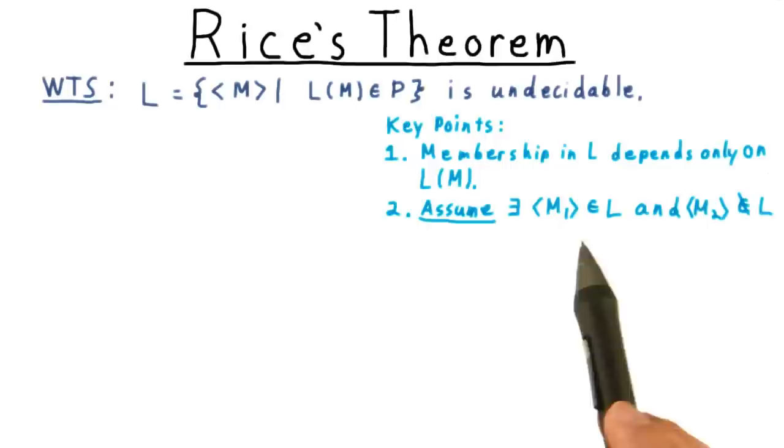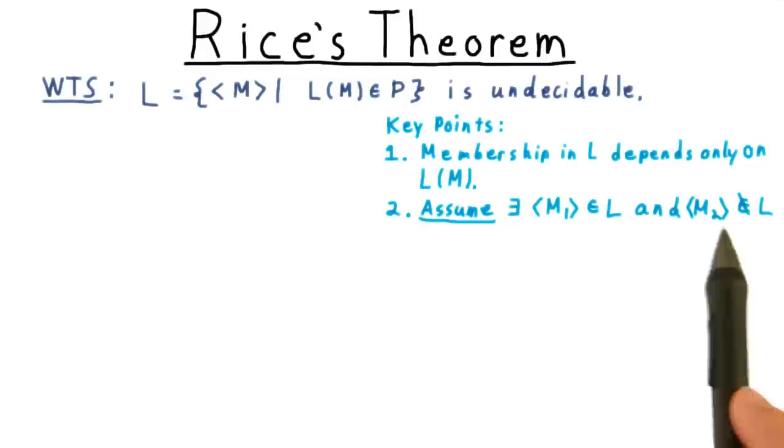We'll assume that there's some machine, M1, in the language, and another machine, M2, outside the language. That's the only additional assumption we need.